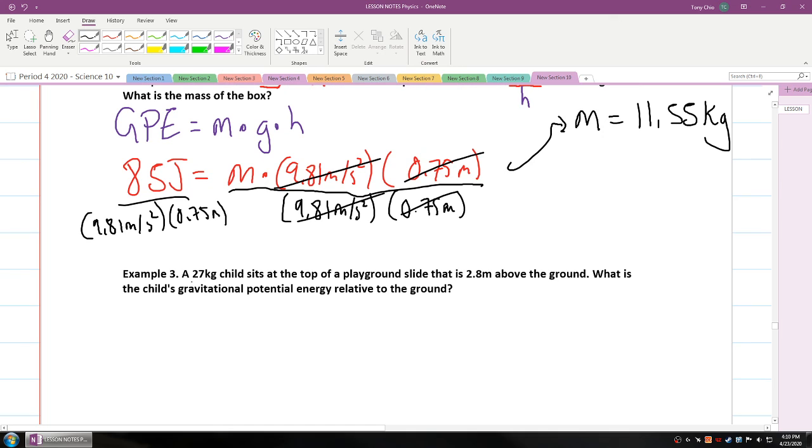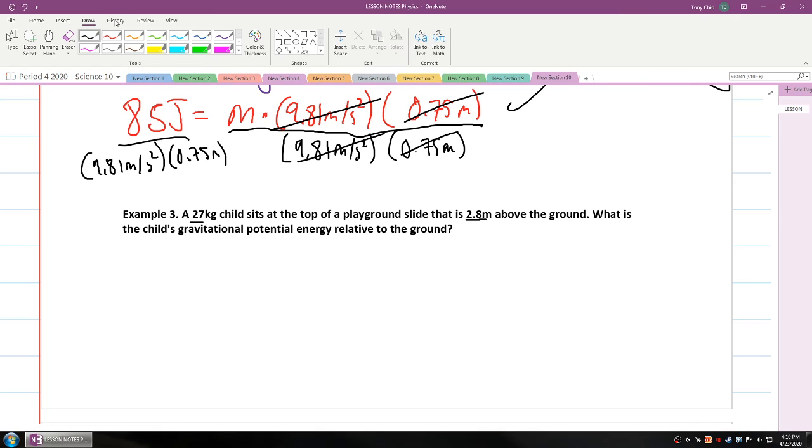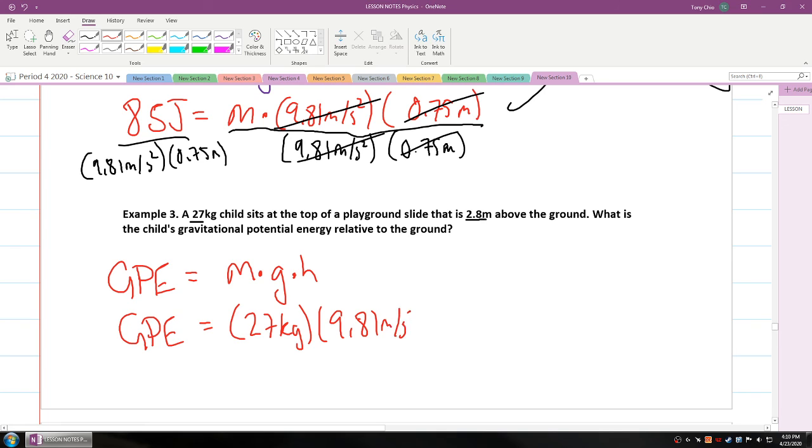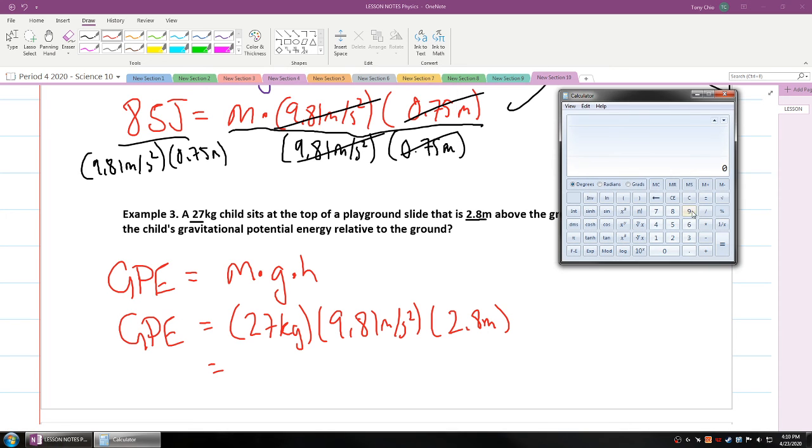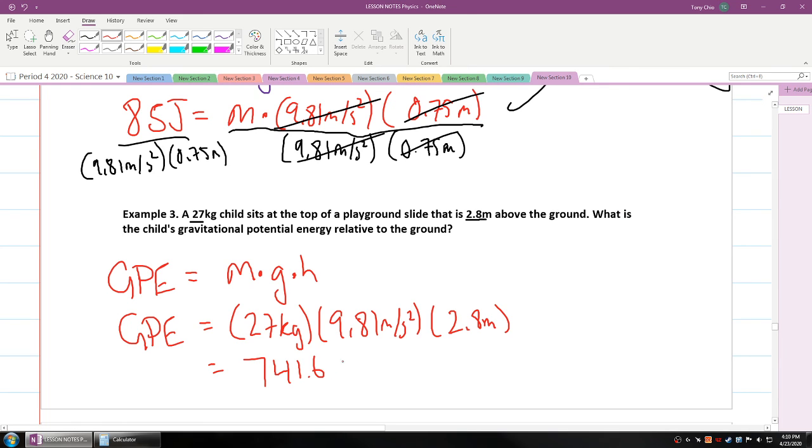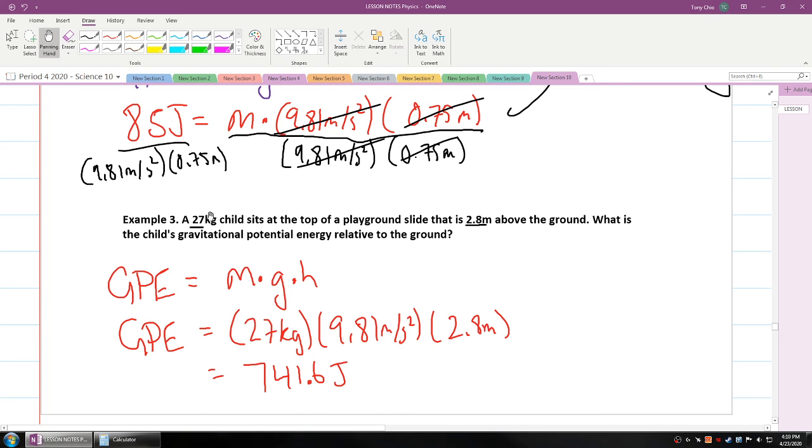The last example is this. A 27 kilogram child sits at the top of a playground slide that is 2.8 meters above the ground. What is the child's gravitational potential energy relative to the ground? So in this case again, GPE is equal to mass times gravity times height. You're trying to solve for GPE this time. It's equal to 27 kilograms, that's the mass, times gravity, 9.81 meters per second squared, times height, 2.8 meters. What is this child's gravitational potential energy? So you're going to get 27 times 9.81 times 2.8, you're going to get 741.6 joules of energy. So this child will have a lot of energy because they're sitting pretty high off the ground and they have quite a bit of mass.